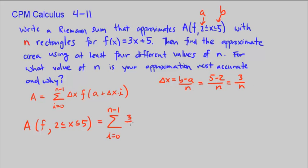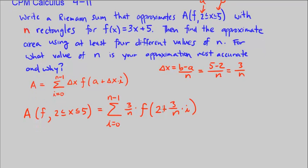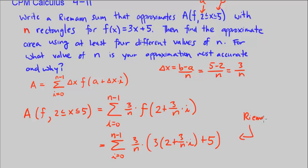So delta x is 3/n times f of, well, a again was 2. So 2 plus delta x, remember, was 3/n times i. What was our function f? f(x) = 3x + 5. So we can plug that in. We get i equals 0 to n minus 1 of 3/n times, and then our function now is going to be 3 times (2 + 3/n × i) + 5. So this is the Riemann sum right here that approximates the area.